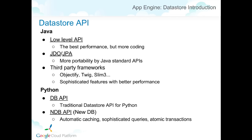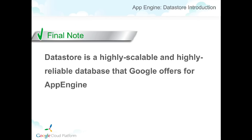These are only some examples of the low-level APIs in Java and Python. There are various kinds of APIs and third-party frameworks for Java to choose from — one with a standard API for portability, one with more functionality like caching, or one with higher-level APIs. Some APIs may be introduced or deprecated over time. The most important takeaway is that the Datastore is a highly scalable and highly reliable database that Google offers for App Engine.